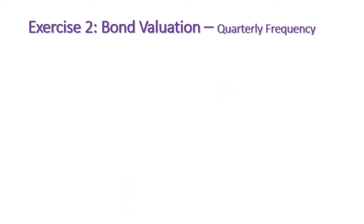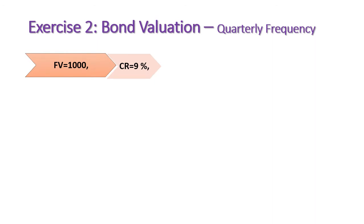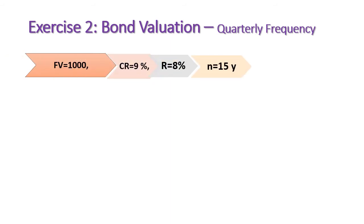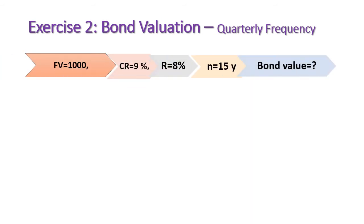In exercise two, we find bond value using quarterly time frequency. The bond has a face value of 1,000 Egyptian pounds, a coupon rate of 9%, and investors require an 8% rate of return. The bond has 15 years remaining to maturity. Find the bond value.